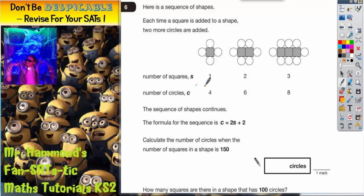We've got the number of squares, so when there's one square there's four circles, two squares is six circles, three squares is eight circles.